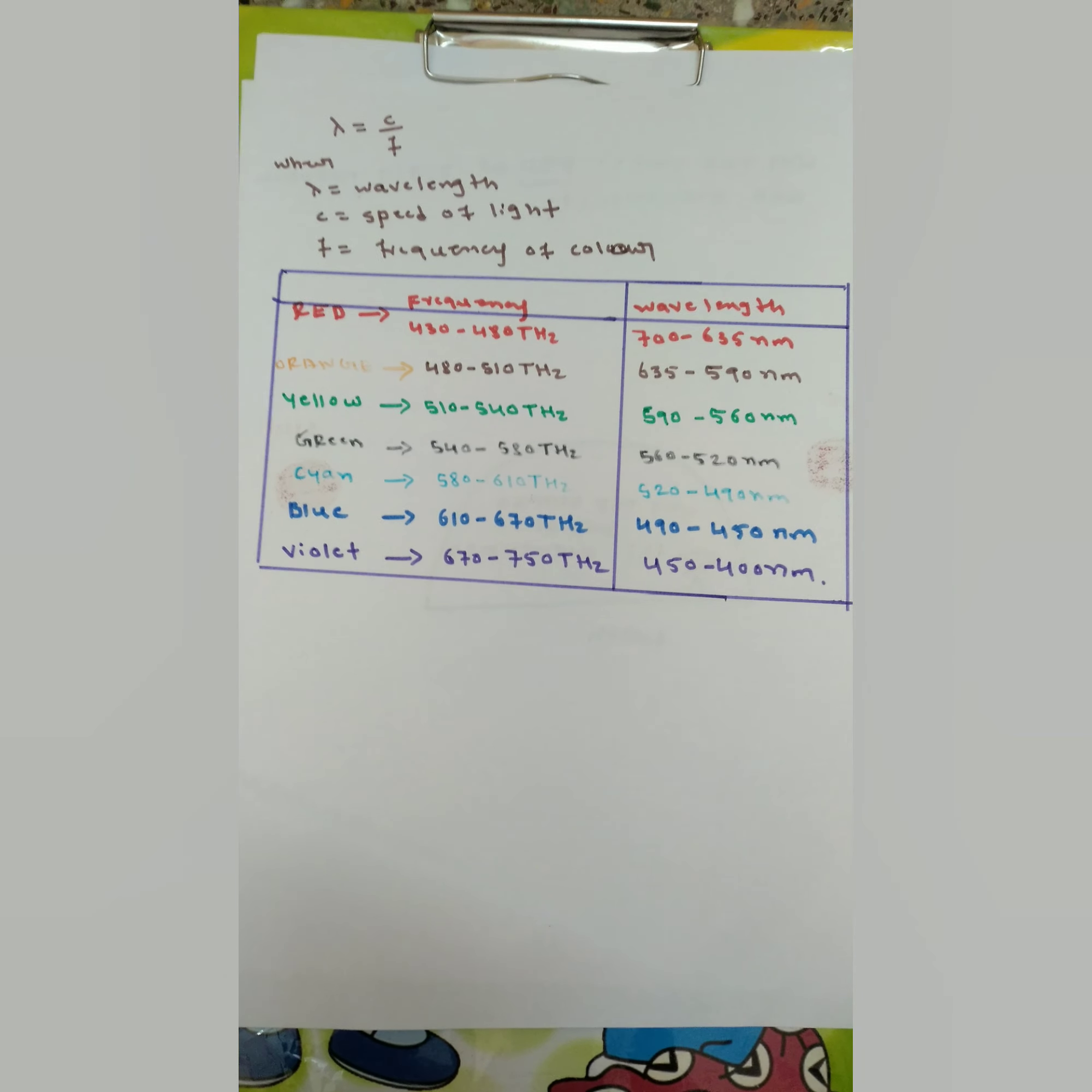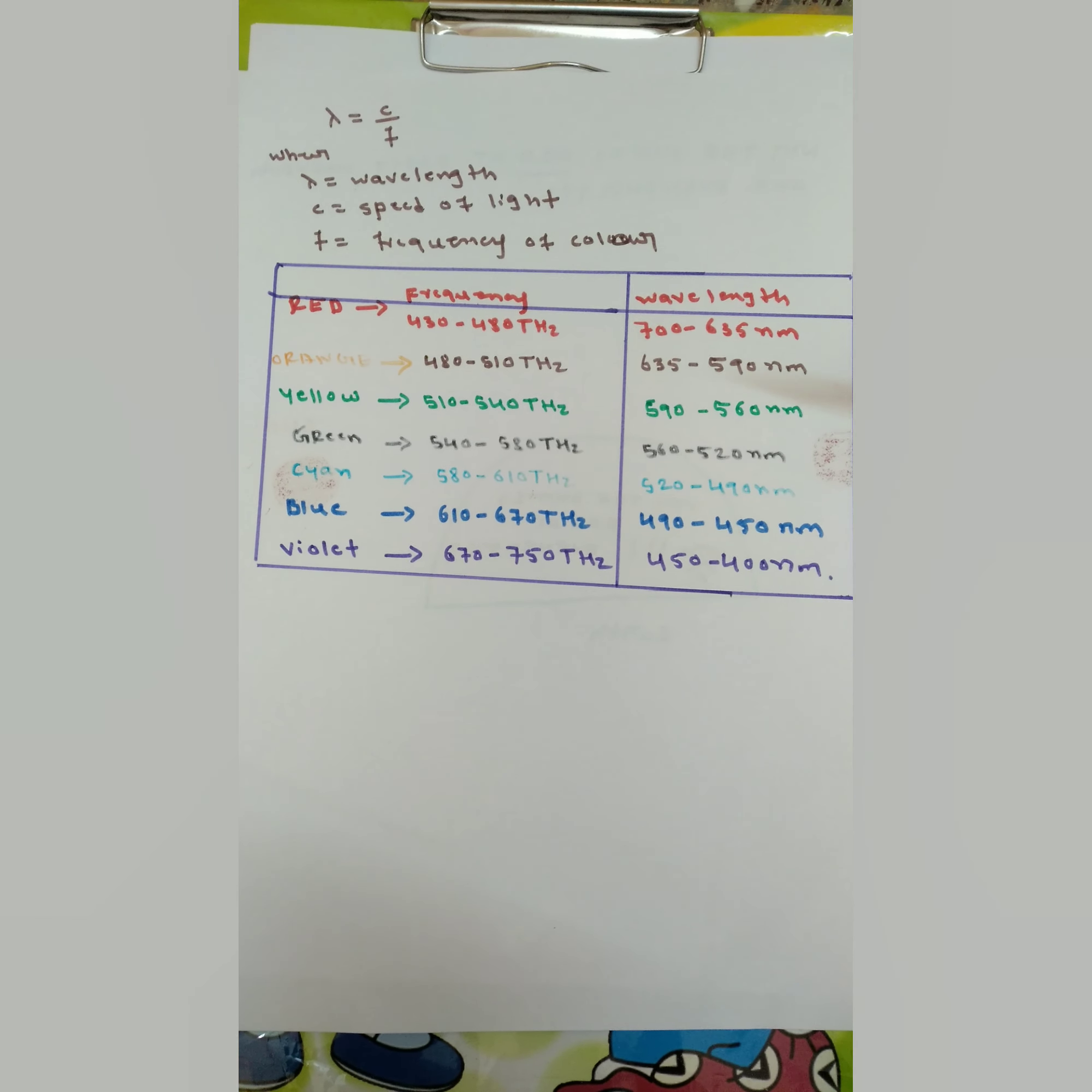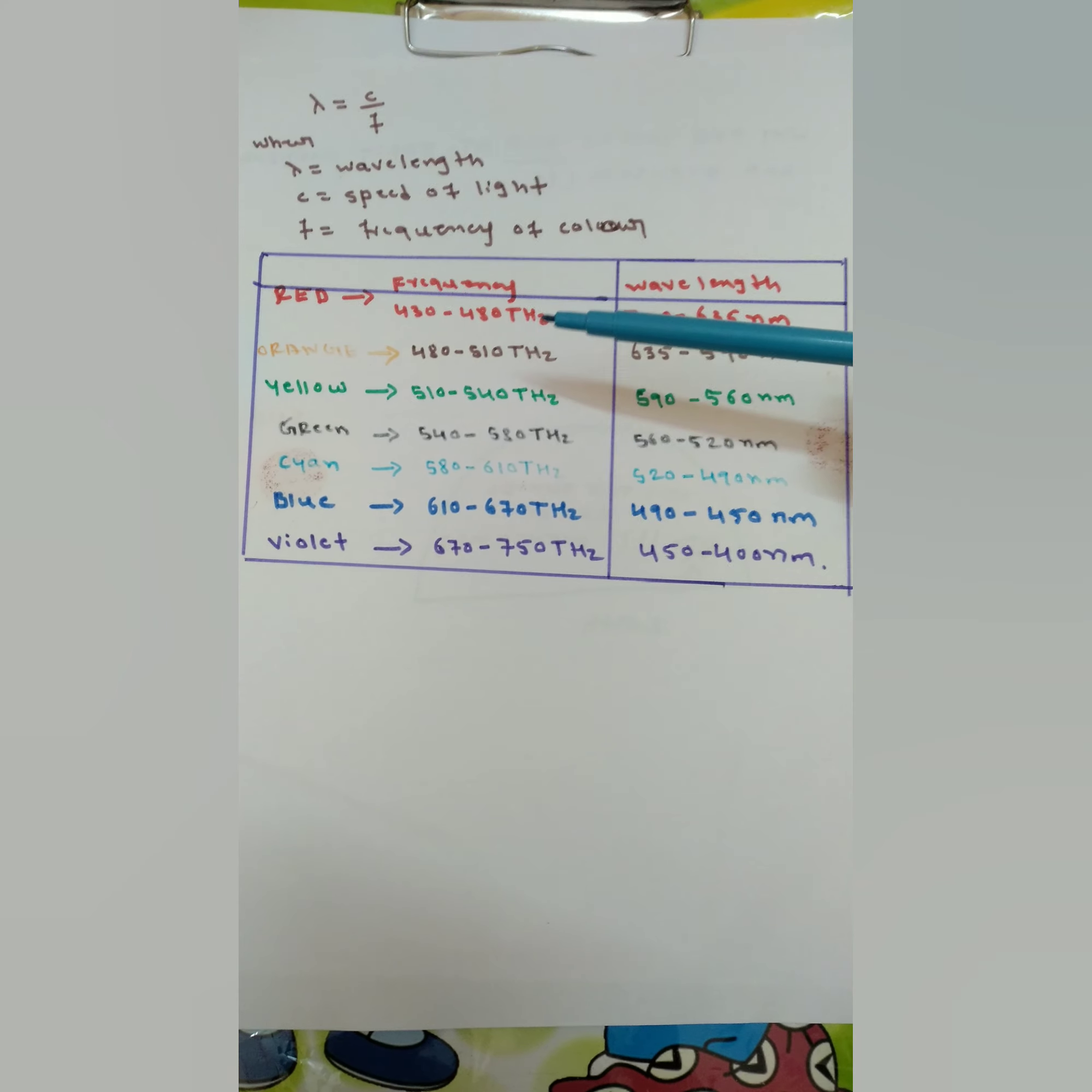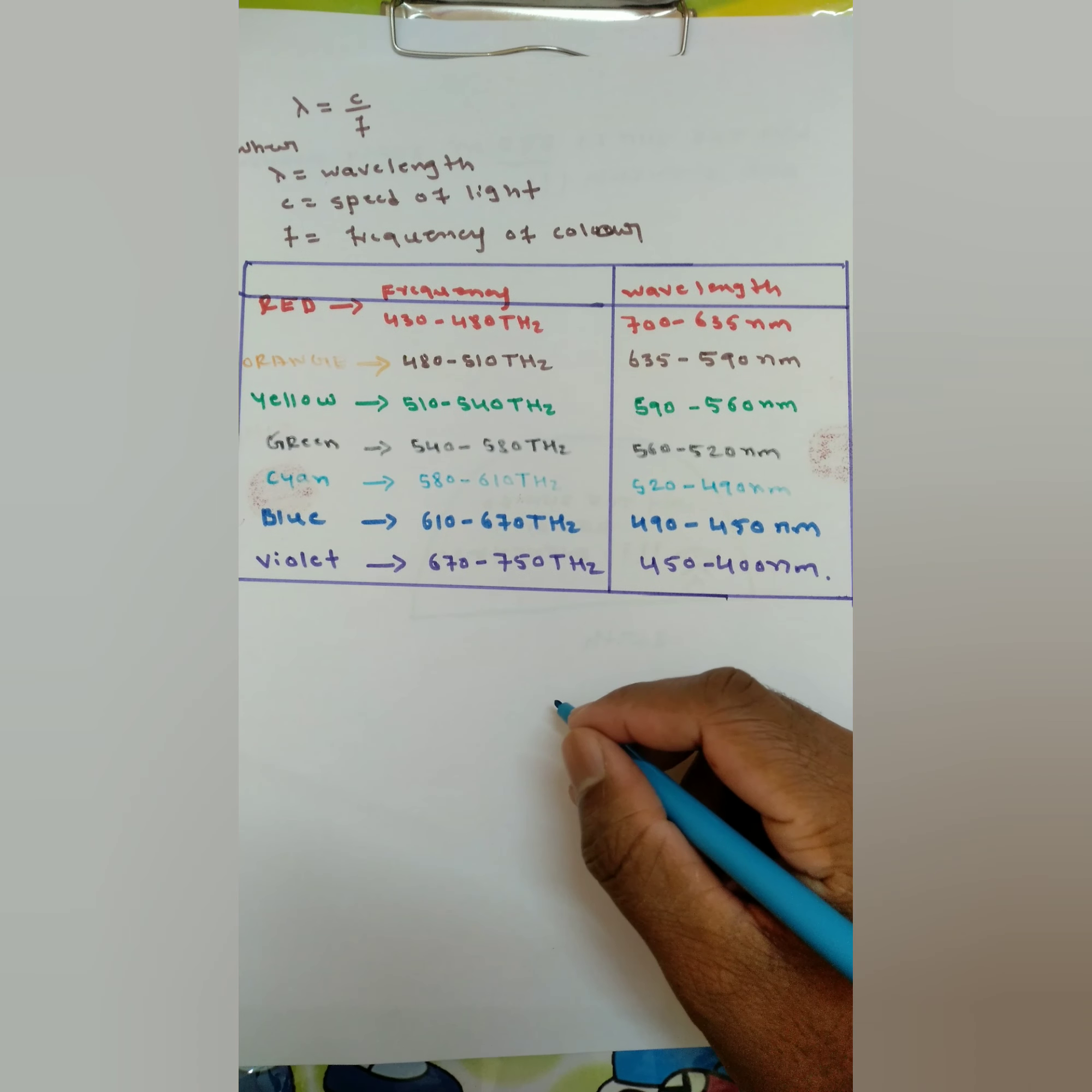Now coming to the colors I have mentioned here: red, orange, yellow, green, cyan, blue, and violet, with their corresponding frequency and wavelength. For red it is 430 to 480 terahertz and wavelength is 700 to 635 nanometers. As you can see, the frequency decreases as you move towards violet, and wavelength increases because the relation between frequency and wavelength is inverse.